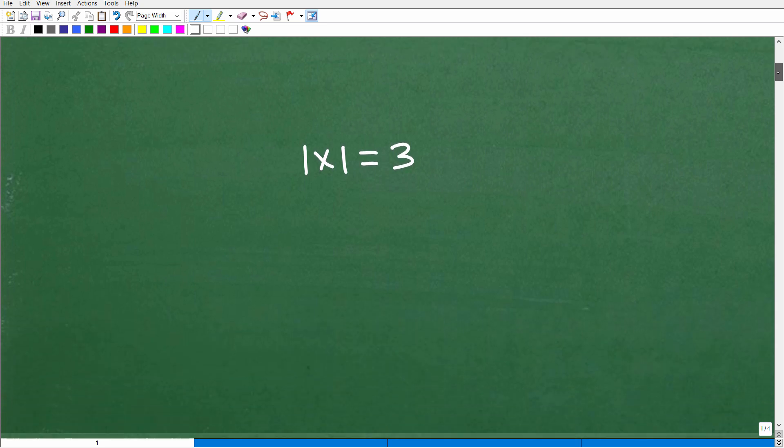And let's start off with a nice basic problem. Okay, so here we have the absolute value of x is equal to 3. So what is the solution to this problem? Now, just stop and think about it for a second. I'm asking you the absolute value of some number is 3. Okay, so what are those numbers? Okay, is there one answer or two answers?